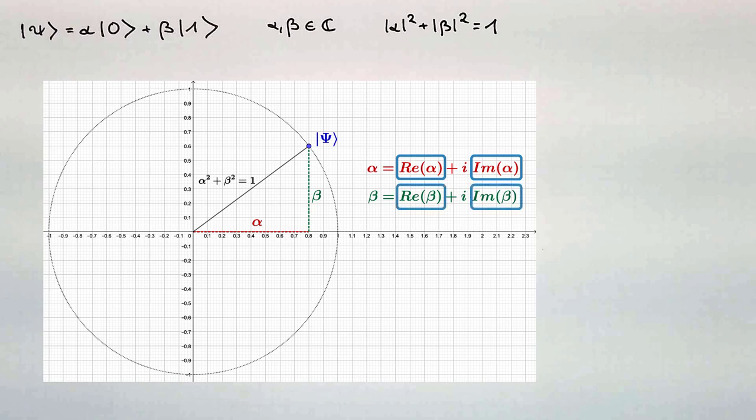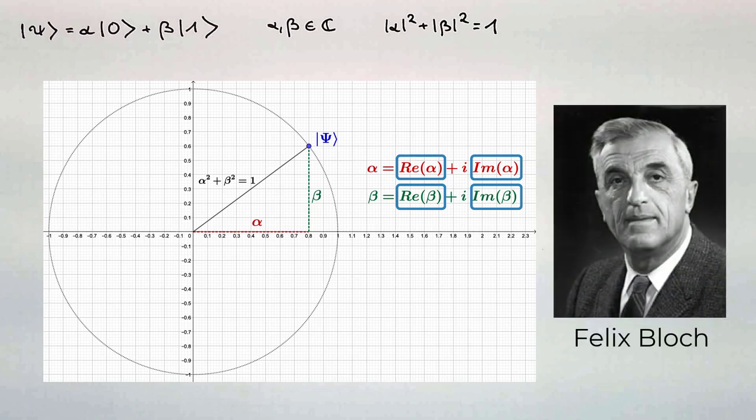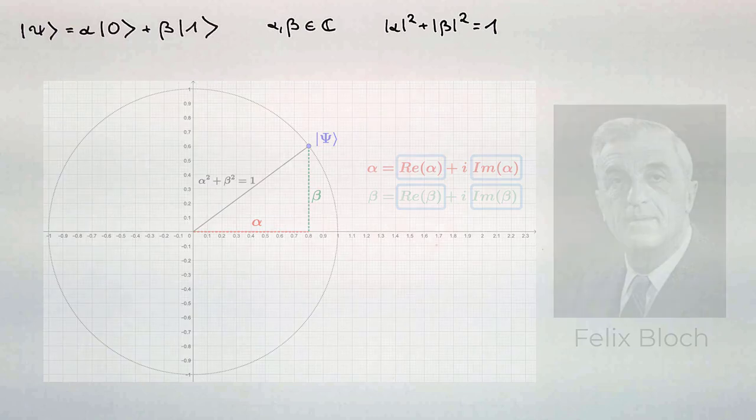Luckily, the Swiss-American physicist Felix Bloch had a very good idea on how to visualize the state of a qubit as a point in the three-dimensional space. This, more precisely, is a point on a sphere, which is nowadays called Bloch sphere, to honor his idea. Now, let's take a closer look at Bloch's great contribution to quantum computing.